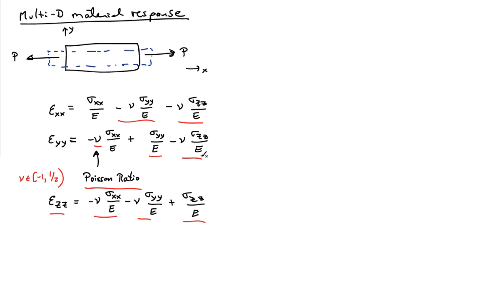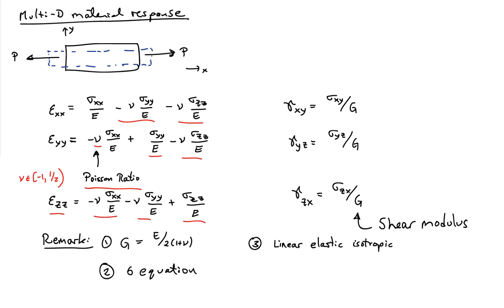So this gives us a complete look at what happens in three dimensions for what are known as linear elastic isotropic materials. Now, of course, there are also shear strains, and the shear strains are always proportional to the shear stresses through the shear modulus, which we use the symbol G to represent.